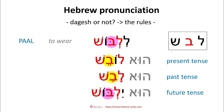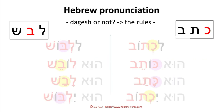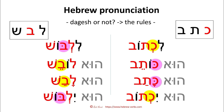If you now compare the two: on the right we have a potential dagesh on the first root position, and on the left we have a potential dagesh on the second root position. You see it is exactly opposite — when there is none in the infinitive for the first root position, there is one for the second root position. I understand these are a lot of rules, but I just wanted to show you that there are rules — it's not that there are no rules.